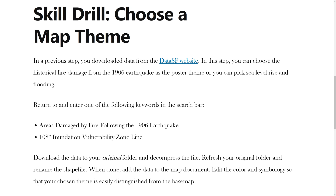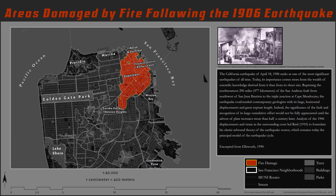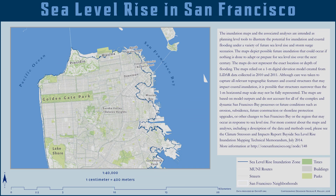Choose one of the following map themes. You can choose the historical fire damage from the 1906 earthquake as the theme, or you can pick sea level rise and flooding. Use your theme as a keyword and download the shapefile from the DataSF website. Save the file to your original folder and decompress the file.